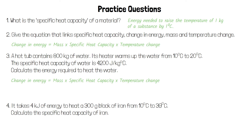The temperature change from 10 to 20 degrees is 10 degrees. Change in energy is equal to the mass of 800 times the specific heat capacity of 4200 times the temperature change of 10 degrees. This gives us a change in energy of 33,600,000.